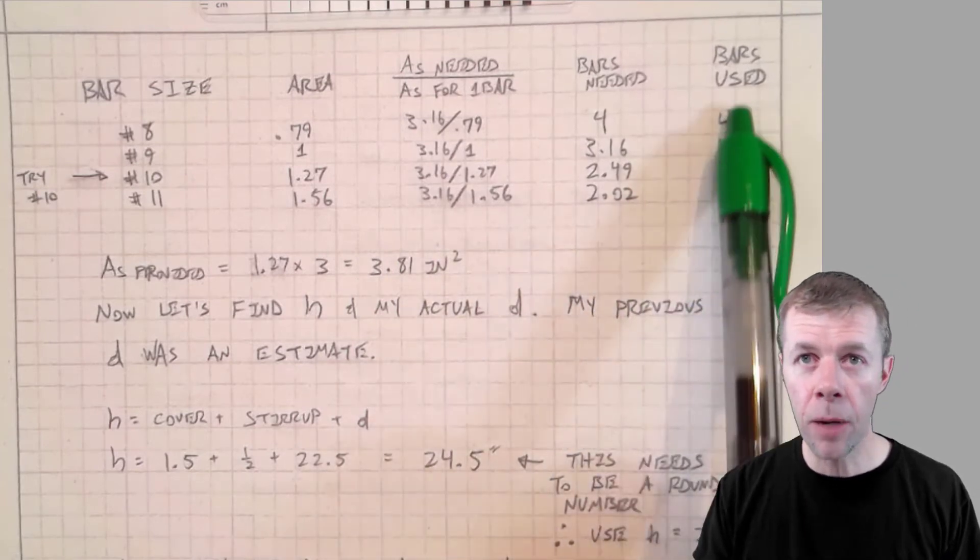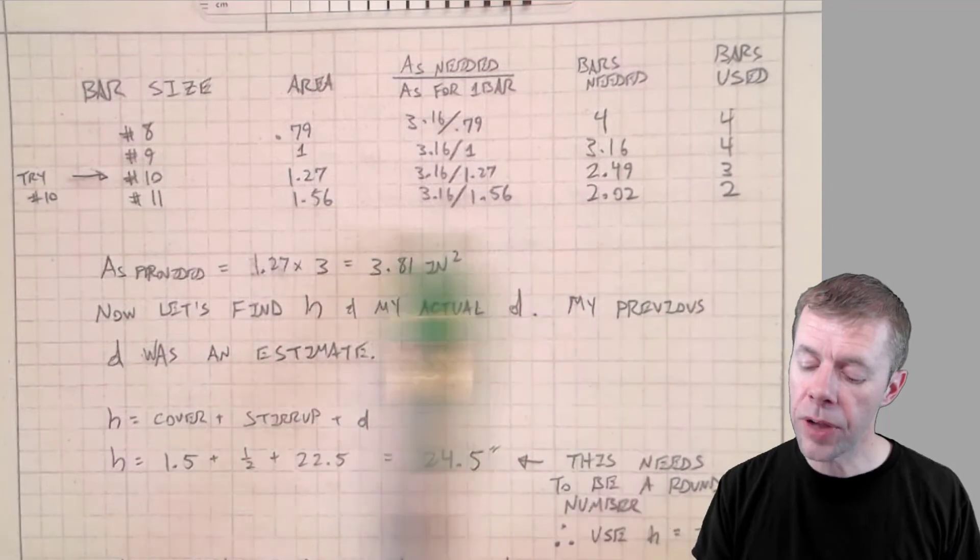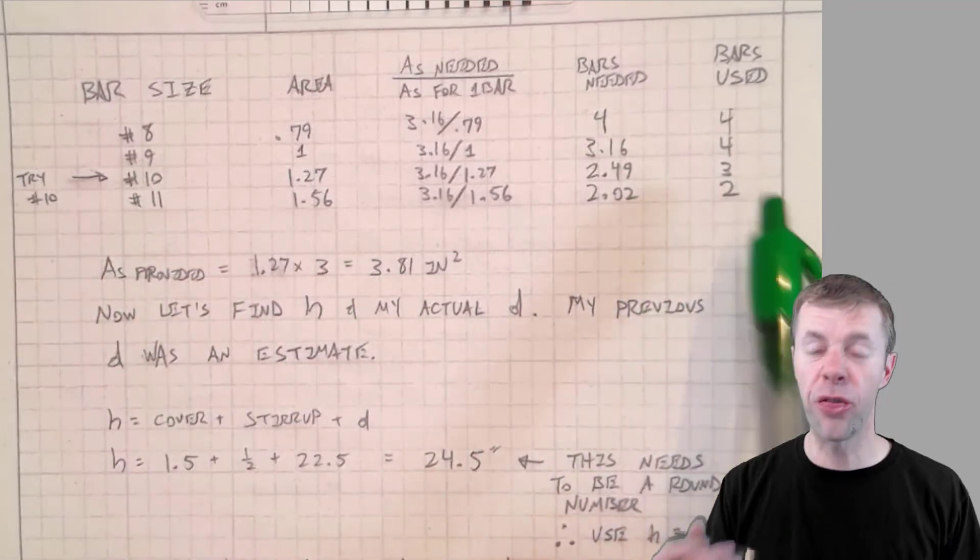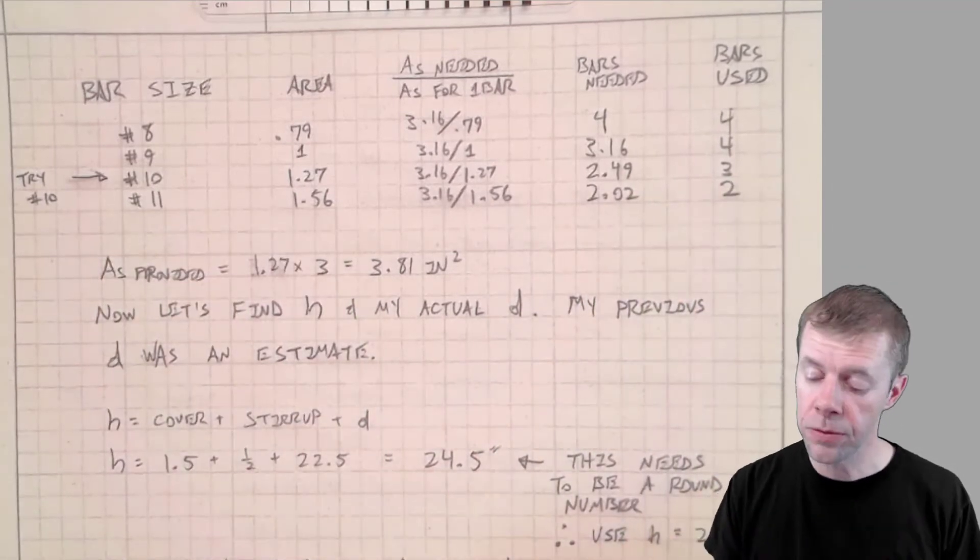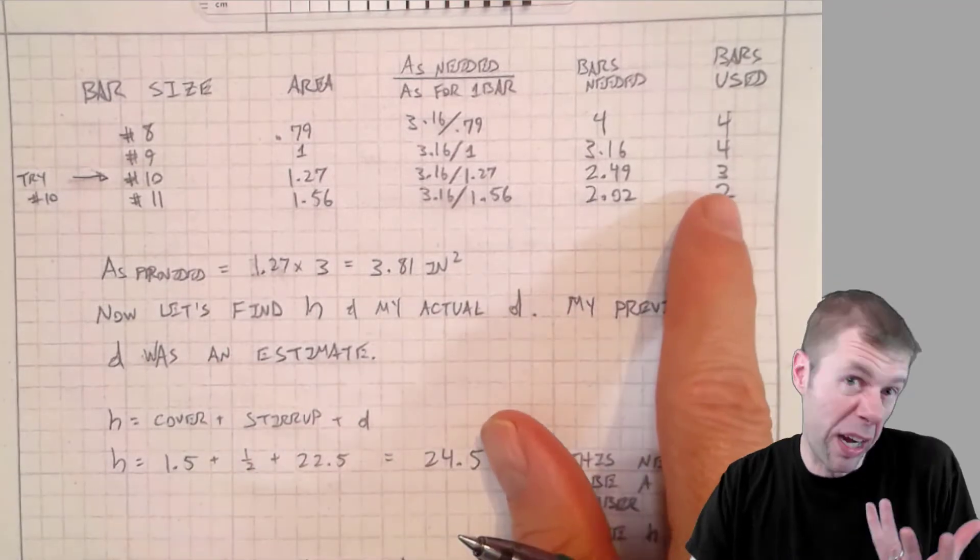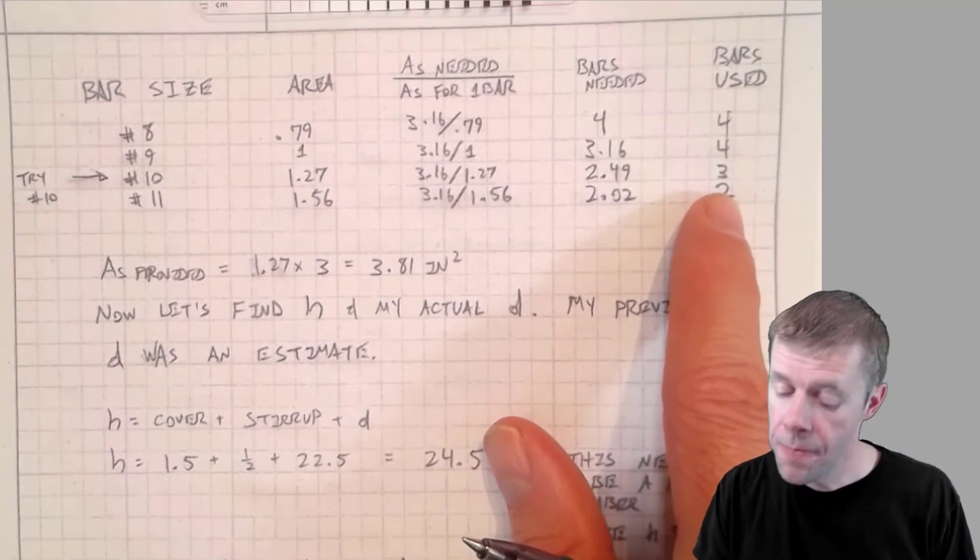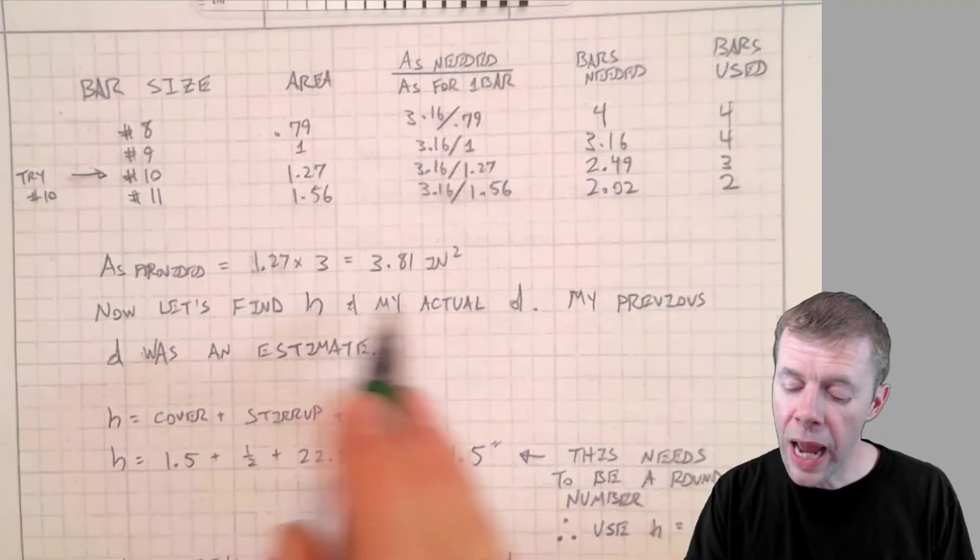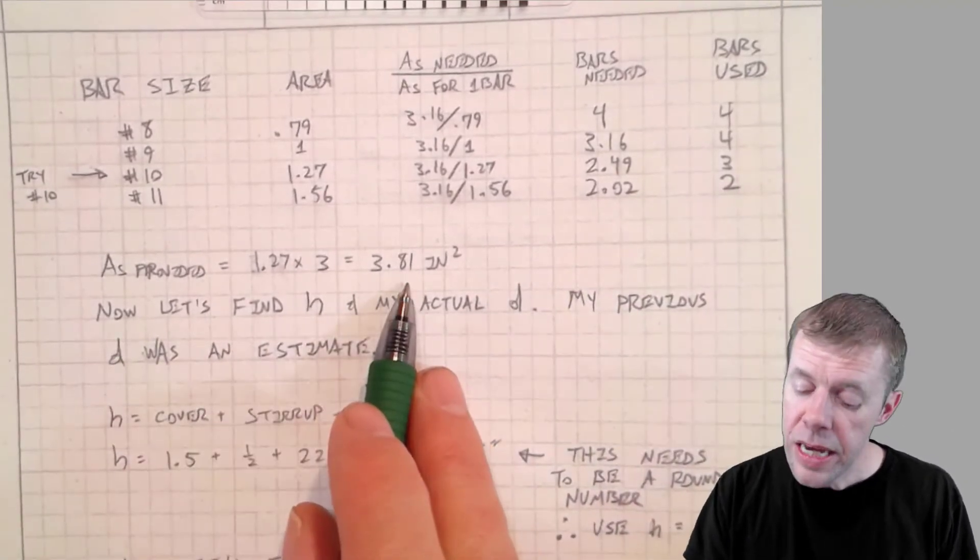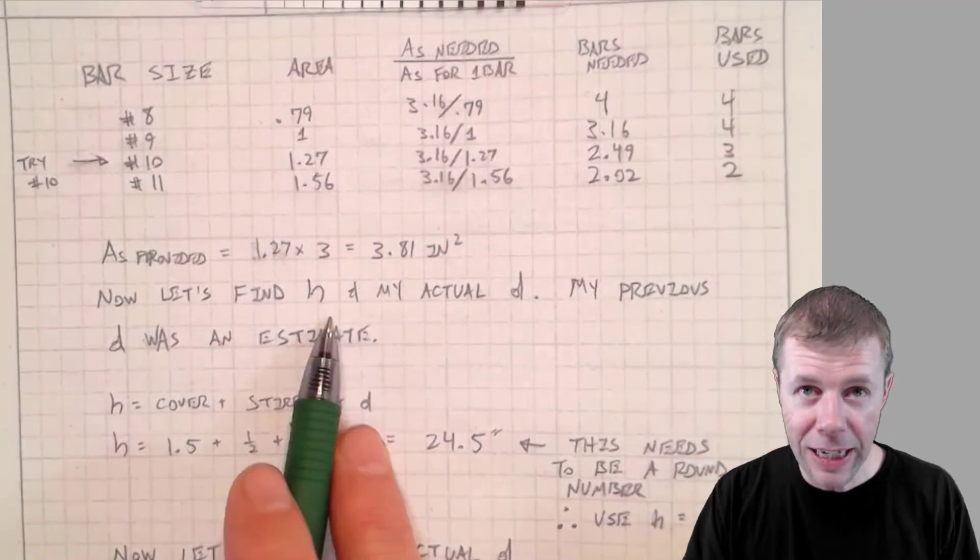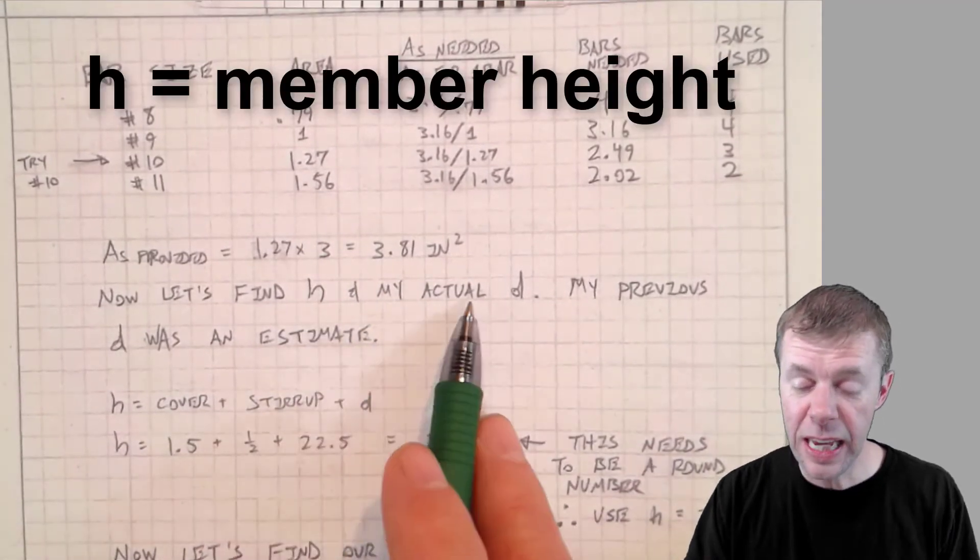Now I can choose any number here. I'm going to go pick a number 10 bar because I like about 3 to 4 bars on my cross section. And I like a number 10. I could have chosen any of these and tried to make them work. So I'm going to provide 3.81 inches squared.